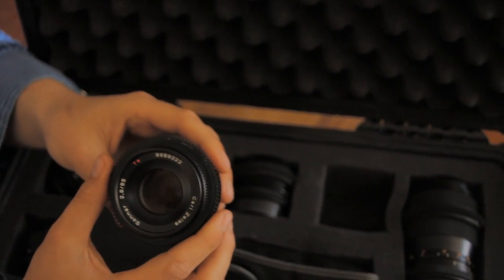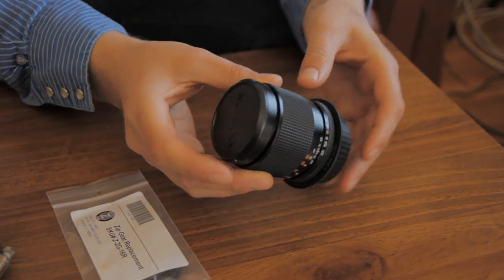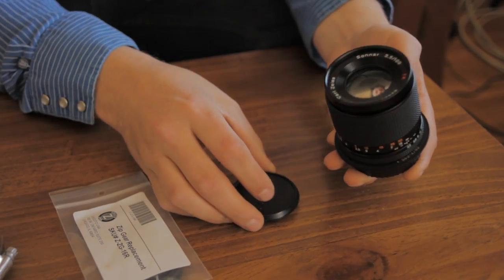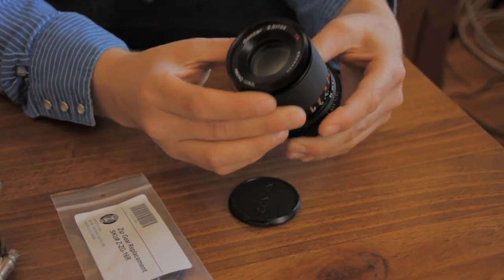Let's get started. So here's what you'll need. First things first you'll need a lens. This is a 100mm Carl Zeiss lens.